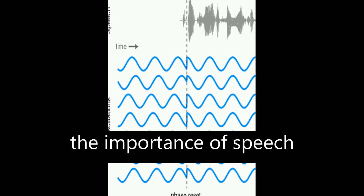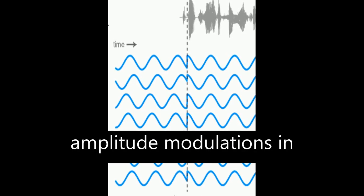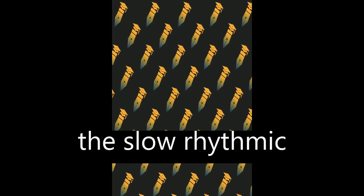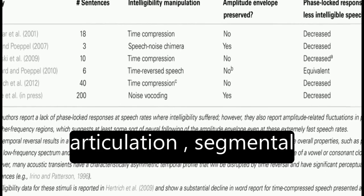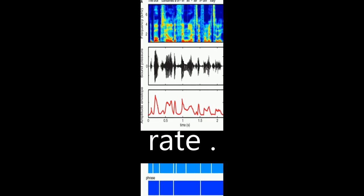The article discusses the importance of speech rhythm and how it is conveyed through amplitude modulations in the slow rhythmic information contained in speech. It explains that listeners rely on this information to understand place and manner of articulation, segmental information, and speech rate.